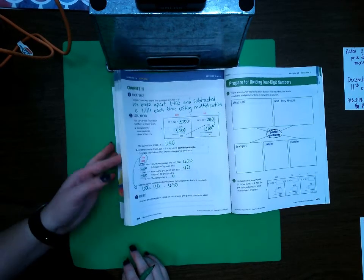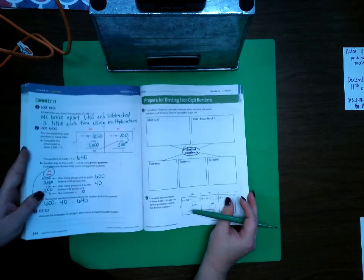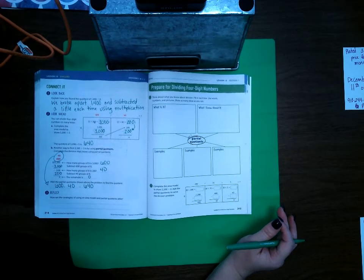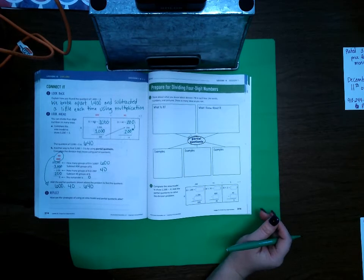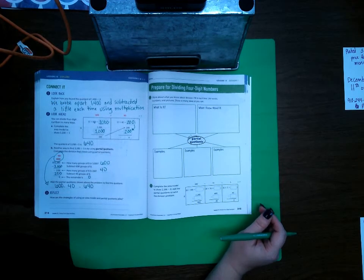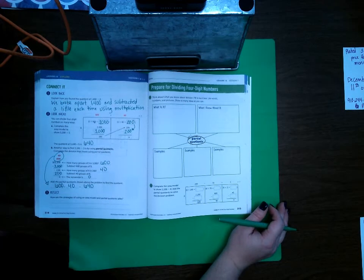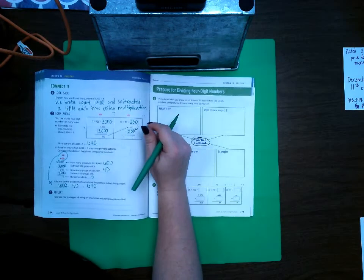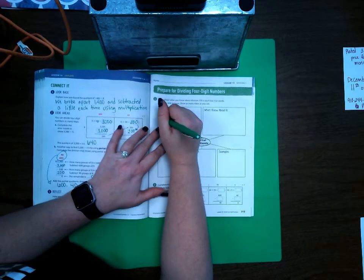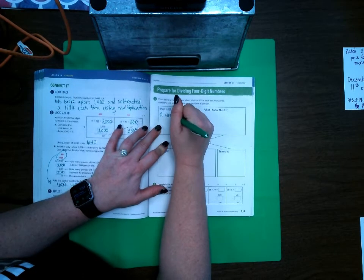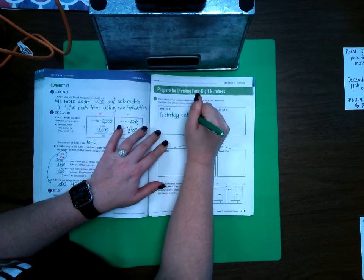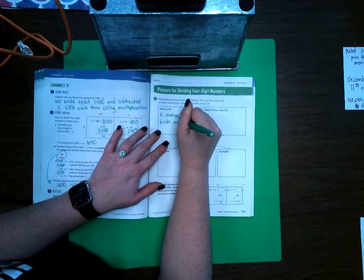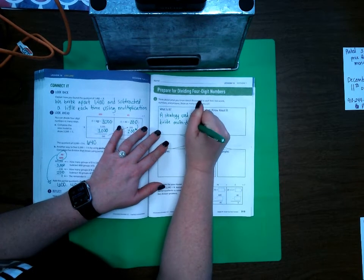Go ahead and go to page 315. Partial quotients is a vocabulary term that we've been using. We use it with multiplication, and now we are going to be using it with long division. And it's just helping us understand place value a little bit better to be able to help us solve math problems. So, what is it? It is a strategy used to divide multi-digit numbers.